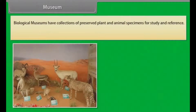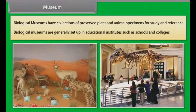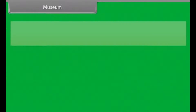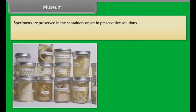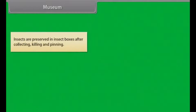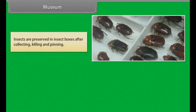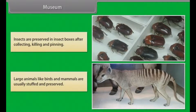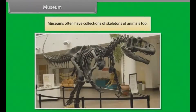Biological museums have collections of preserved plant and animal specimens for study and reference, and are generally set up in educational institutes such as schools and colleges. Specimens are preserved in containers or jars in preservative solutions. Plant and animal specimens may also be preserved as dry specimens. Insects are preserved in insect boxes after collecting, killing and pinning. Large animals like birds and mammals are usually stuffed and preserved. Museums often have collections of skeletons of animals too.